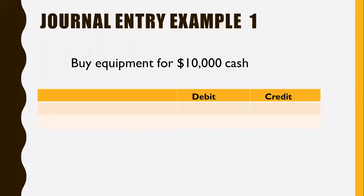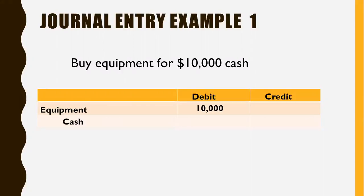Let's do a couple of quick examples. If we buy equipment for cash, that increases the equipment asset, so that's a debit — we write the debit there with the amount under the debit column. We don't normally bother with dollar signs because it makes it messy. Cash is reduced, which is an asset, so that's our credit. That's what our journal entry would look like.